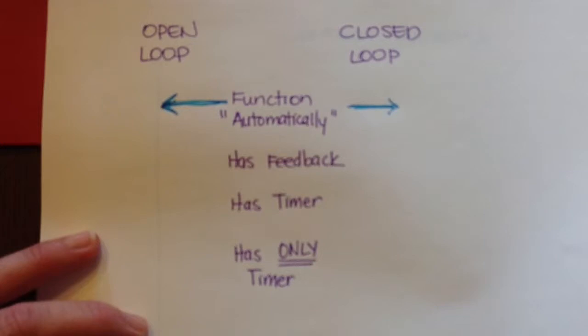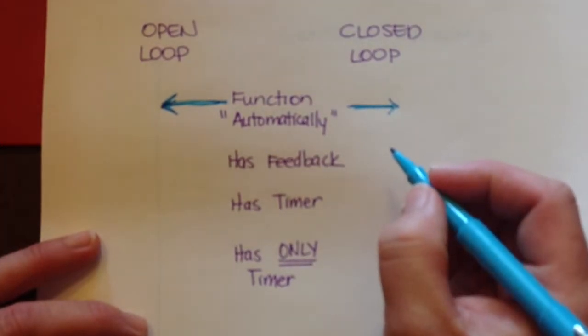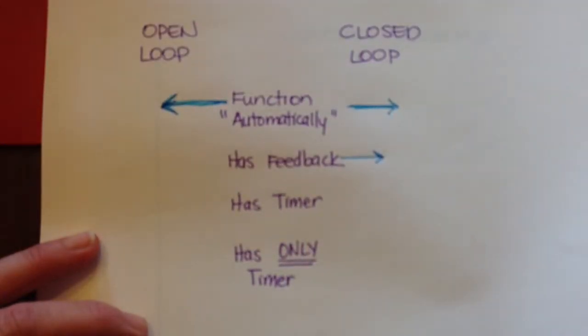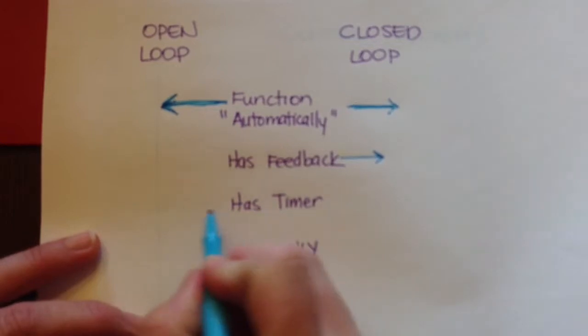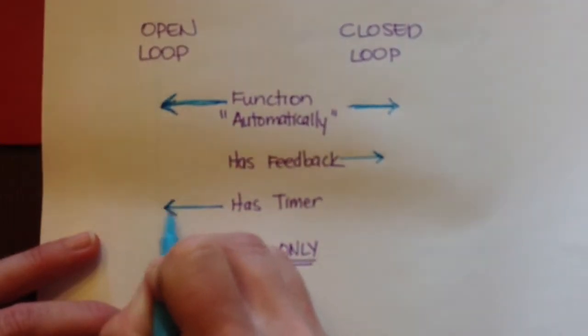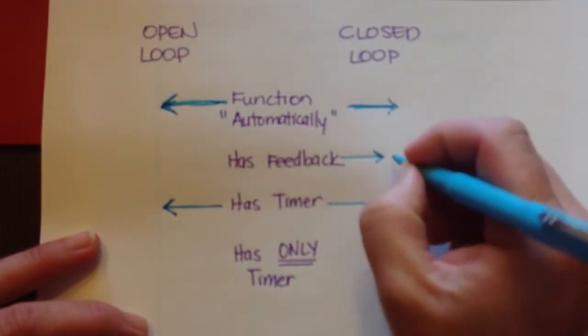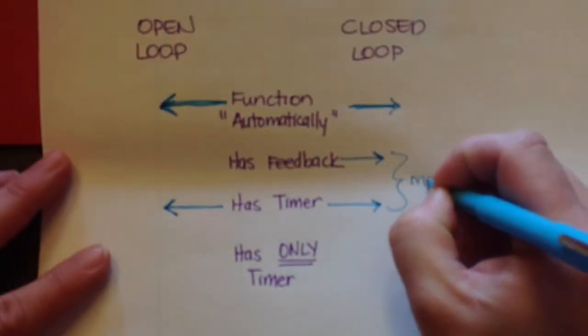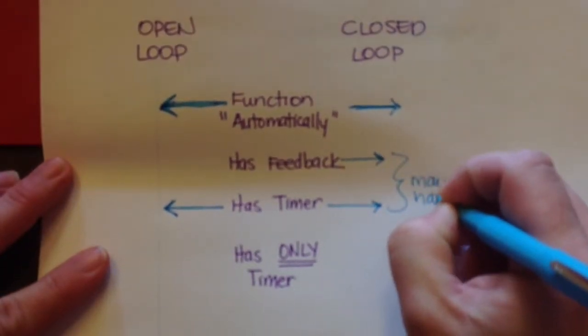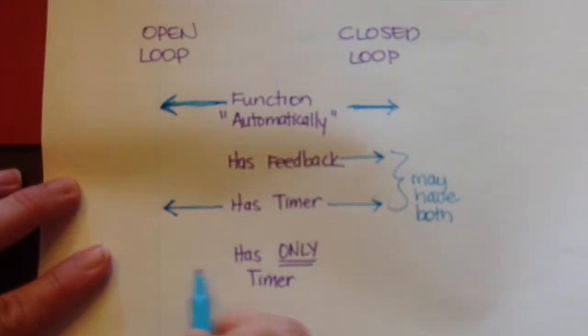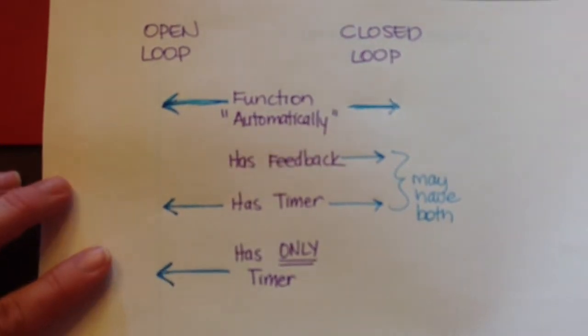Closed loop does it in terms of it has feedback. Open loop does not have feedback and instead operates on a timer. A closed loop may also have a timer, so we can have both of these, but an open loop only has a timer.